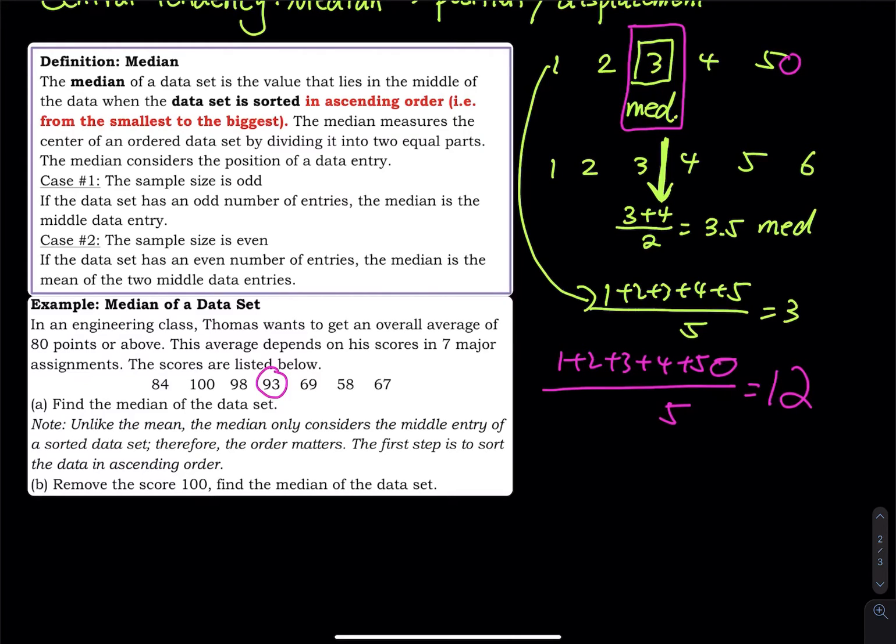The answer is no, because you have to sort the data first. So 93 is not my median, because the data is not sorted in ascending order.